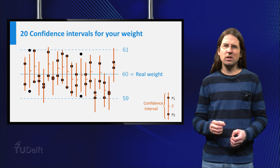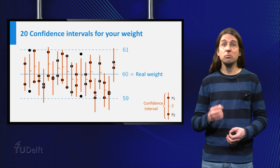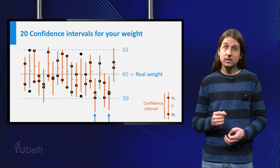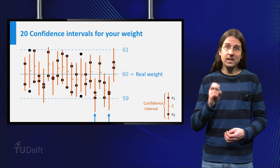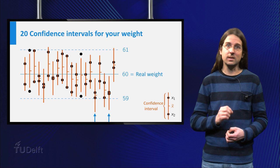Most of the time the confidence interval you construct will contain the true value of 60 kg, but in about 1 in 20 cases the 95% confidence interval you construct will not contain your true weight. Indeed, in this case the second and fifth confidence intervals from the right do not contain 60.